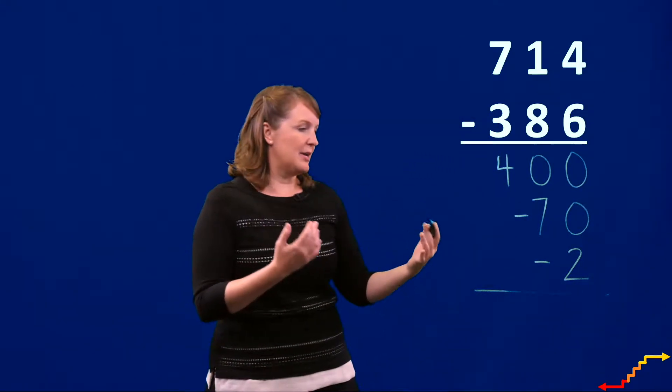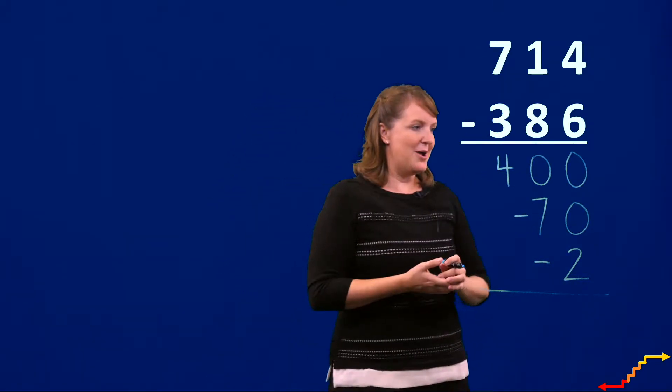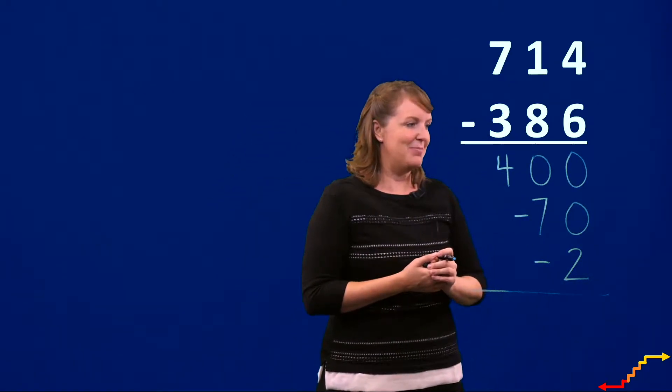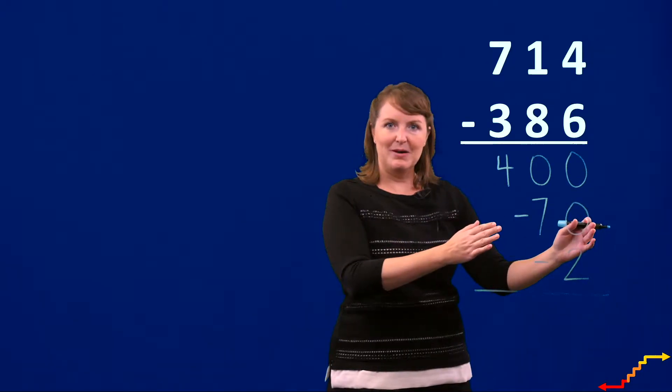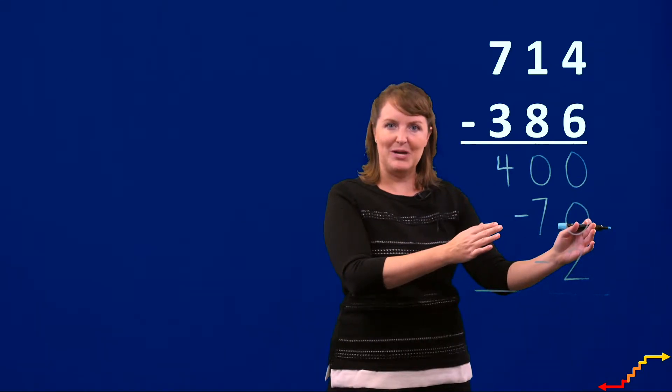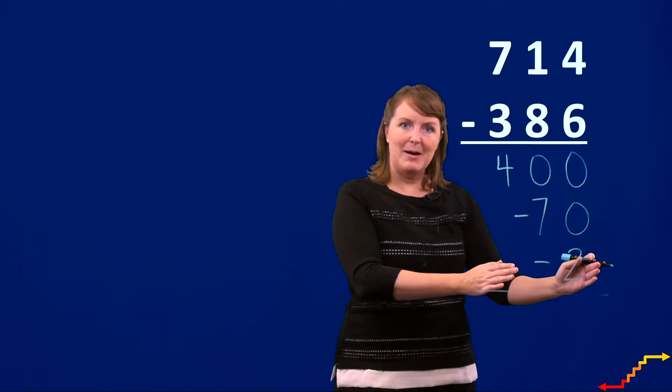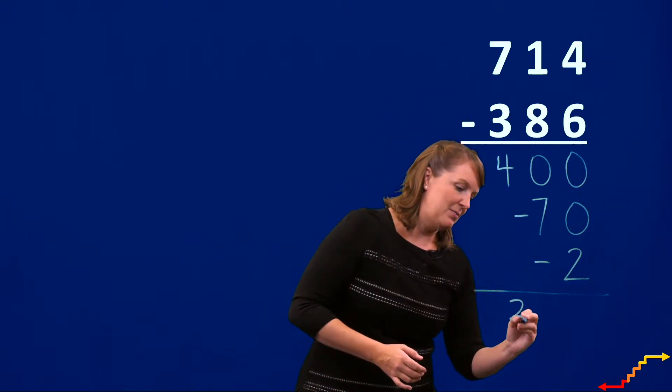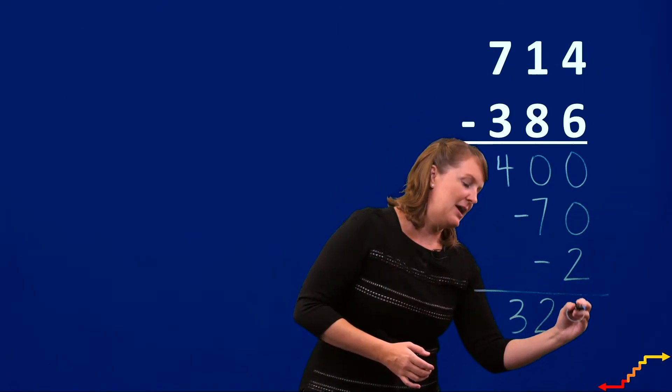Now I'm going to calculate the difference to this subtraction problem. So 400 minus 70 is 330. 330 minus 2 would be 328.